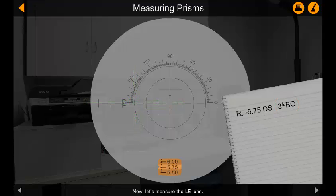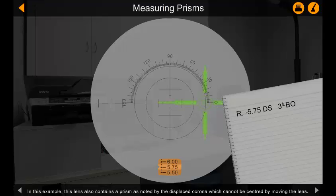Now let's measure the left eye lens. In this example, this lens also contains a prism, as noted by the displaced corona, which cannot be centered by moving the lens.